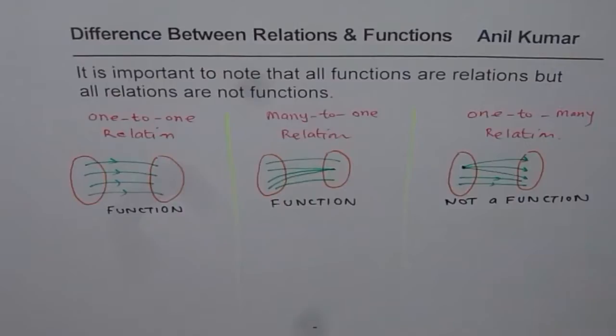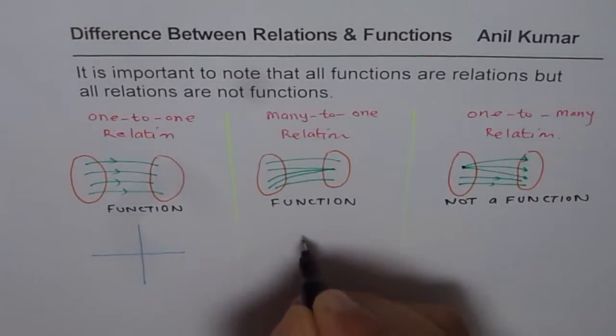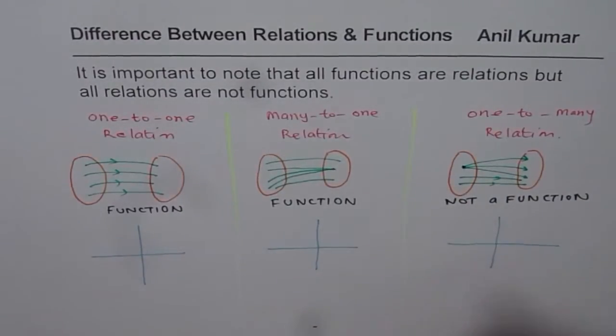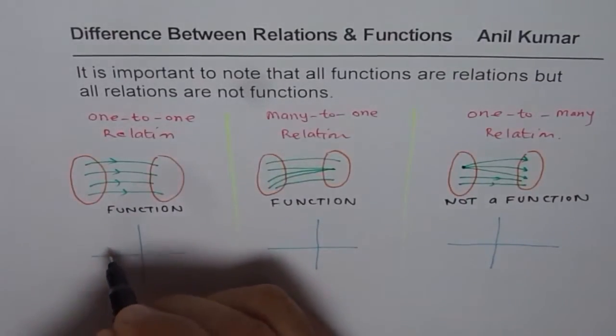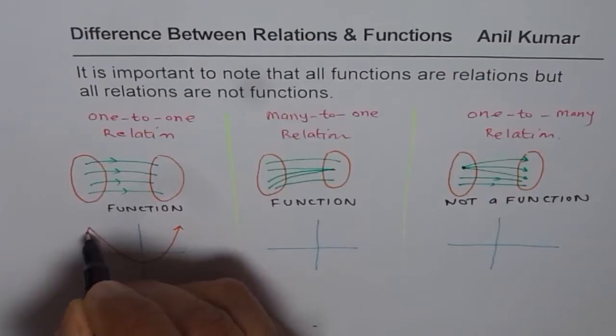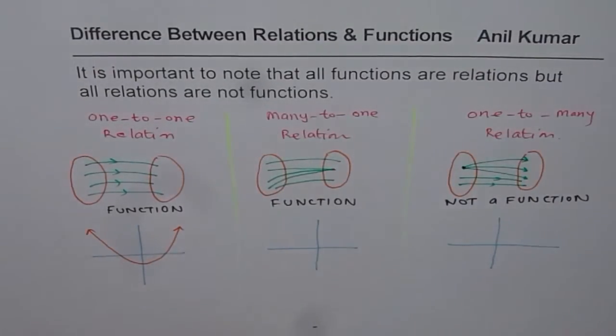If you are looking at the graph of the function, let me sketch few graphs to illustrate this point. The graph could be one-to-one relation, could be kind of like this, a parabola. Every point along the x-axis is having only one value.